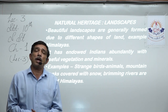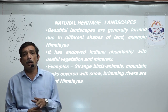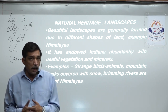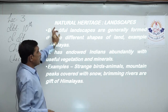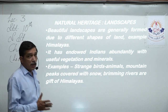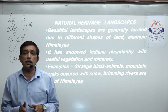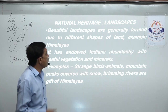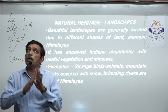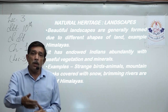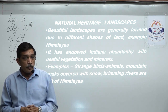Beautiful landscapes are generally formed because of different shapes of land. For example, the Himalayas — if you stand at the bottom of the mountain the landscape in front of you is different; go five kilometers back and the same mountain presents a different landscape; climb halfway and look upward or outward, the landscape is again different. Depending on whether you are standing in front of a seashore, a lake, or on the banks of a river, beautiful landscapes are created.